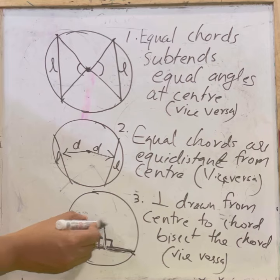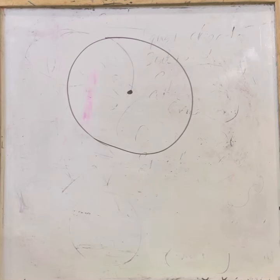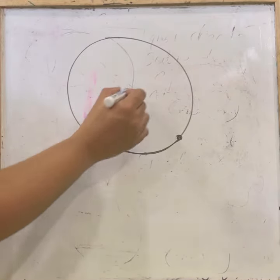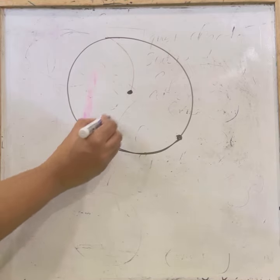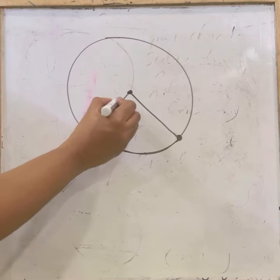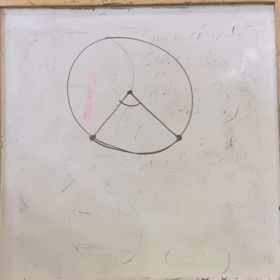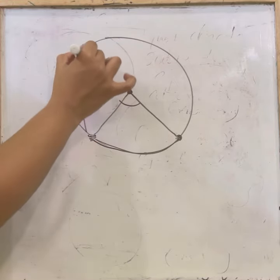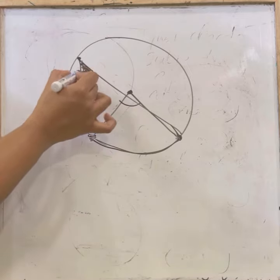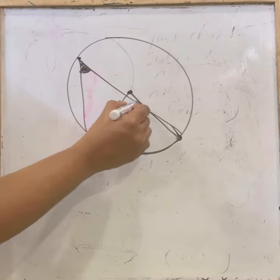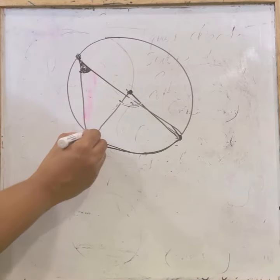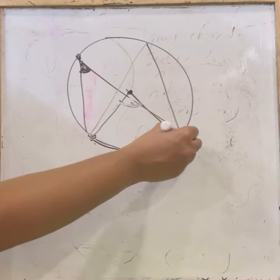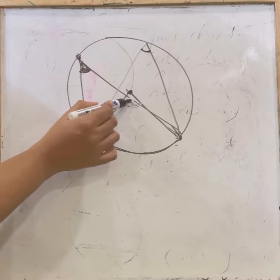Next theorem: the angle subtended by an arc at the center is double the angle subtended by it at any point on the circle. From the same arc, the angle at the center is double the angle formed at any other point on the circle. This holds whichever point on the circle you choose.